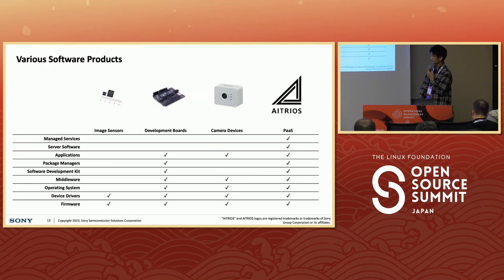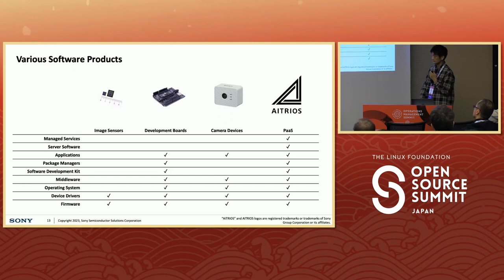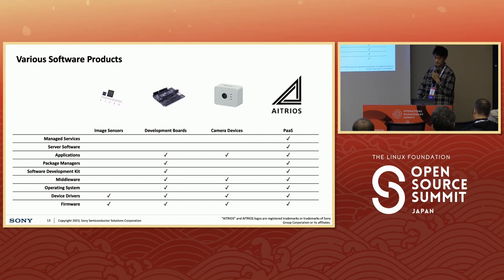Here are some examples of our software products. One of our main products are image sensors, and firmware built into them, and we distribute device drivers to control the sensors. We also have a development board — a kind of small computer — that works with firmware, device drivers, OS, middleware, SDKs, package managers, apps, and so on. We also make camera devices. And as described, we have a platform-as-a-service business involving server software, managed services, and so on.